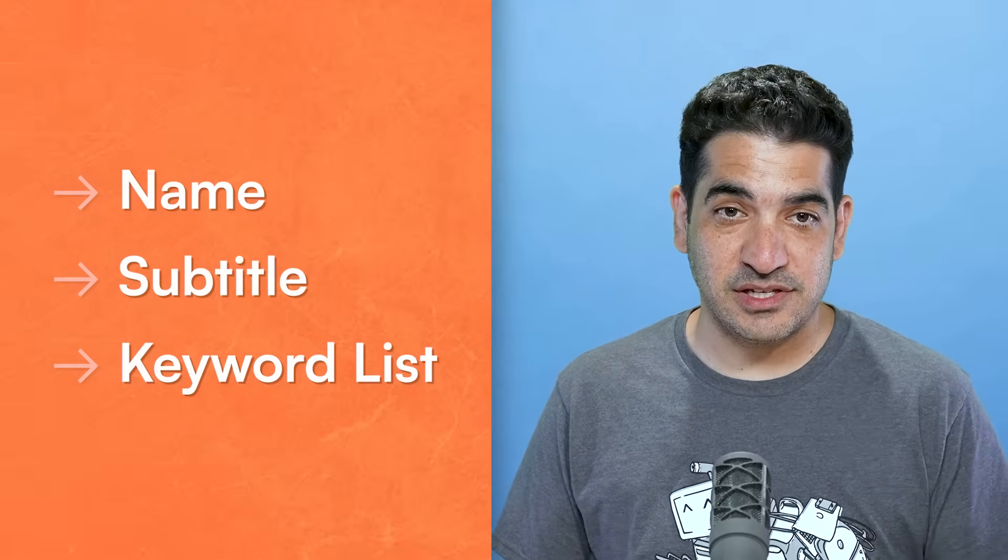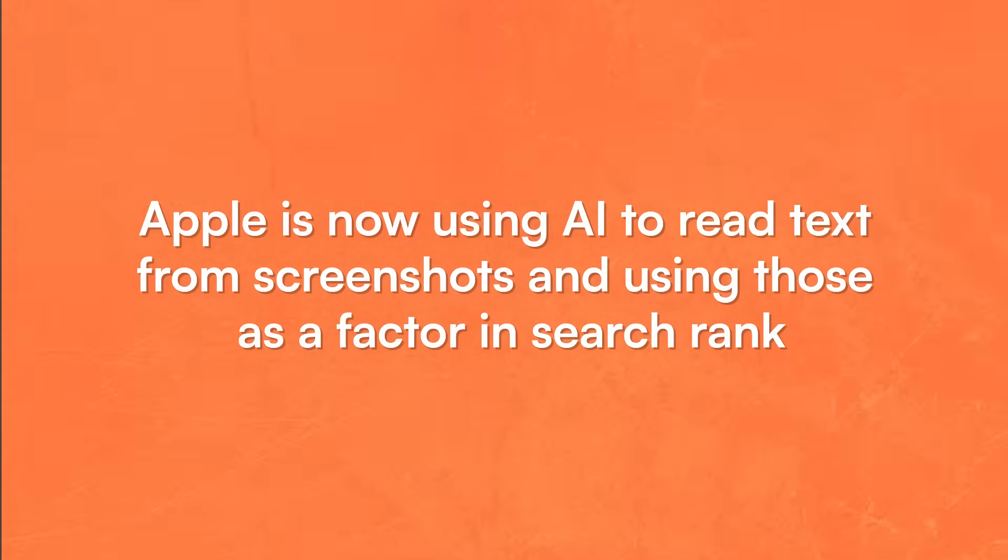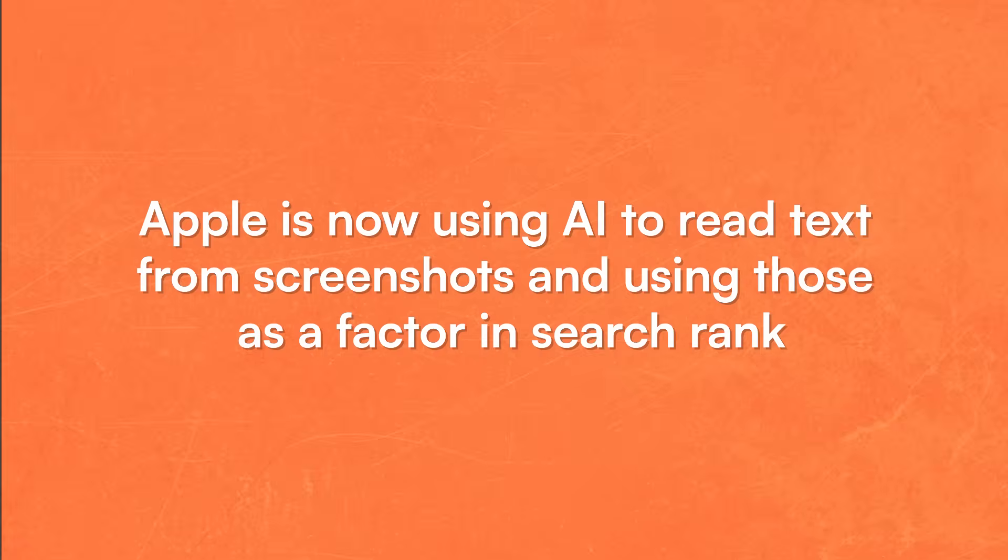Up until now, only the app's name, subtitle, and keyword list counted towards search rankings. But after looking at apps that gained ranks, apps that lost ranks, and their competitors — all using our AppFigures tools and some custom AI I made — the pattern became very clear. Apps with keywords in their screenshots moved up. Apps without them dropped. Apple is now using AI to read text from screenshots and using those as a factor in search rank. This is a big change from Apple, one I've been waiting on for a long time and a huge opportunity to get more discovery.